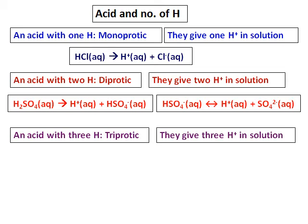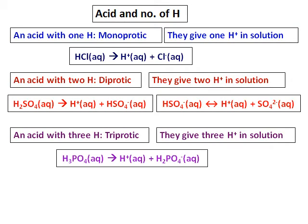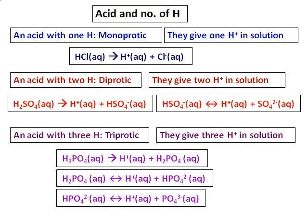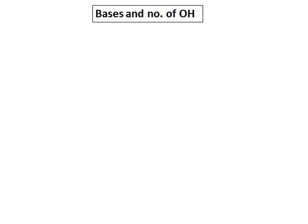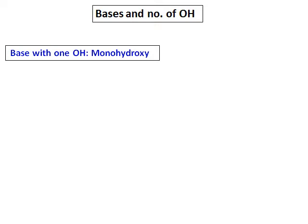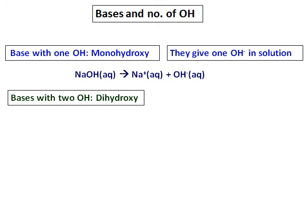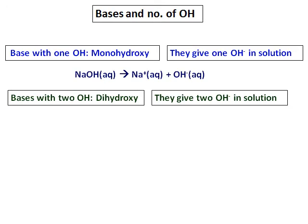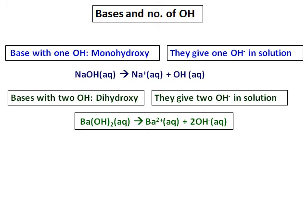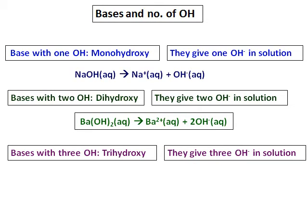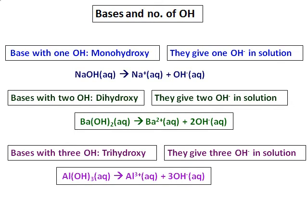If an acid has three hydrogens, we call it triprotic — it gives three hydrogen ions in solution. For example, phosphoric acid ionizes stepwise to form H₂PO₄⁻, HPO₄²⁻, and PO₄³⁻. Similarly, bases are classified by number of hydroxides: monohydroxy bases give one OH⁻ (e.g., NaOH), dihydroxy bases give two OH⁻ (e.g., barium hydroxide gives Ba²⁺ and 2OH⁻), and trihydroxy bases give three OH⁻ (e.g., aluminum hydroxide gives 3OH⁻ in solution).